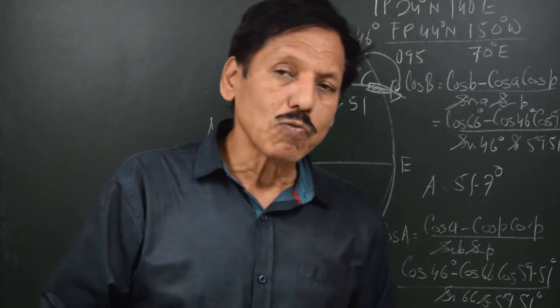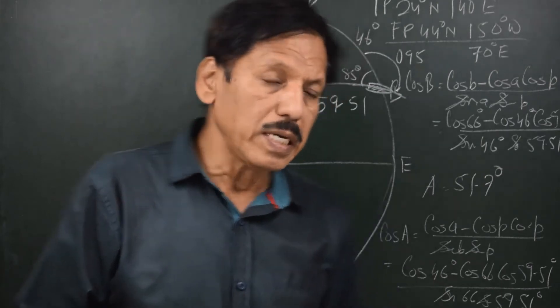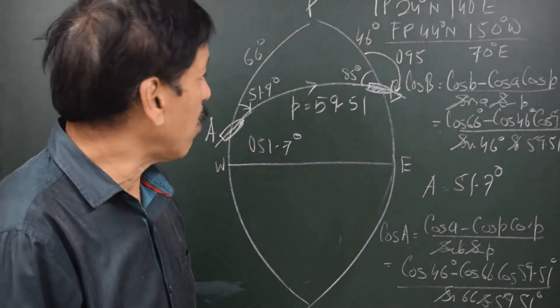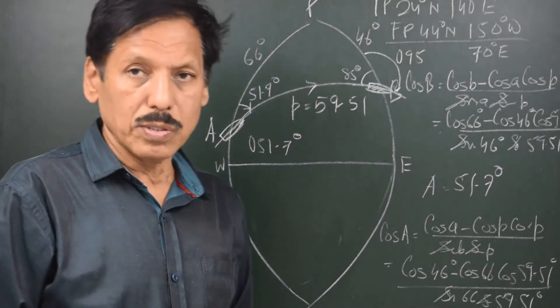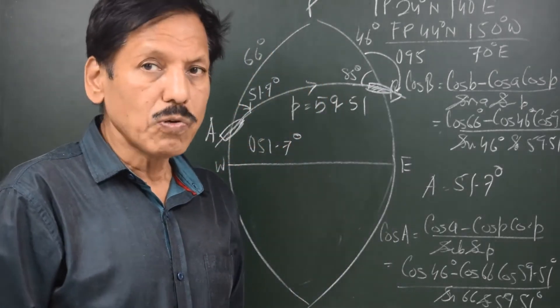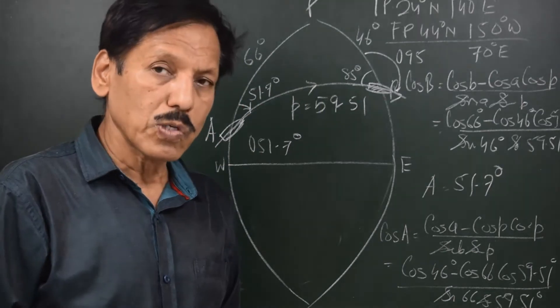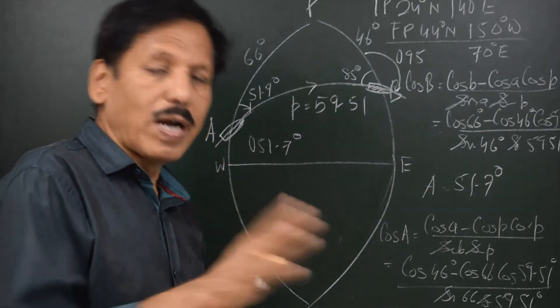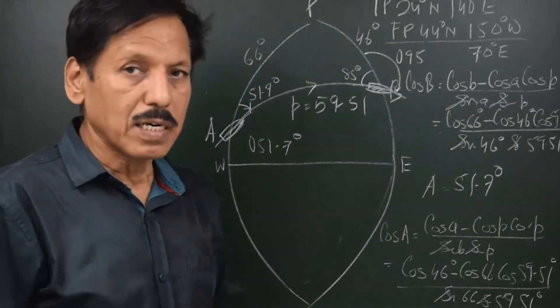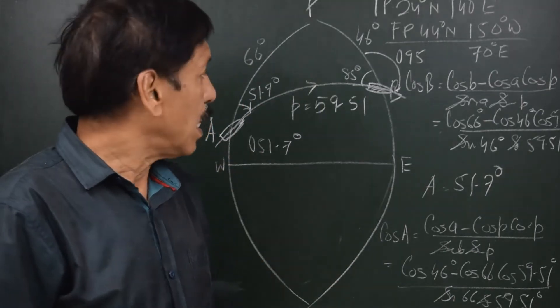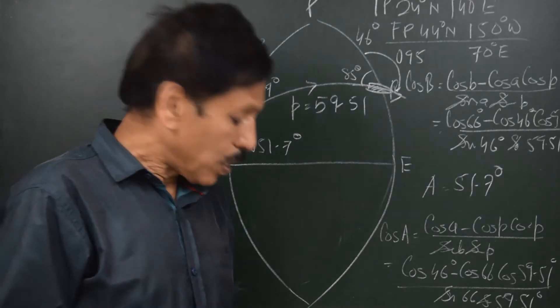We can also find out the initial course and final course without finding out the great circle distance. Let us see how we do it.